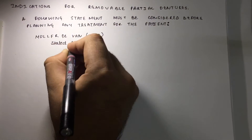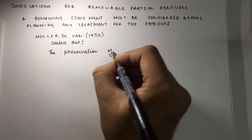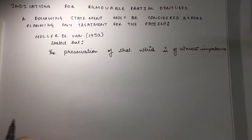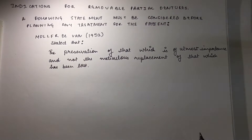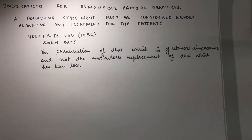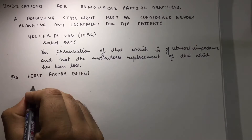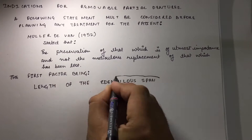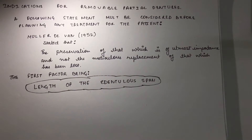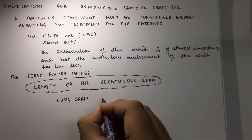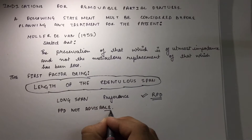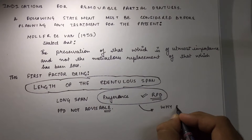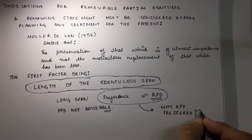Muller-D-Wann in 1952 stated that the preservation of that which remains is of utmost importance and not the meticulous replacement of that which has been lost. The first factor we take into consideration is the length of the edentulous span. In longer edentulous arches, removable partial dentures are preferred and FPD is not advisable.